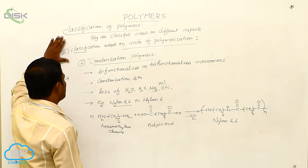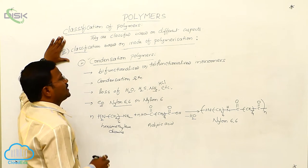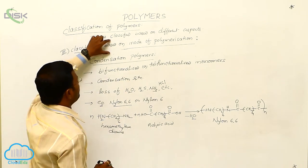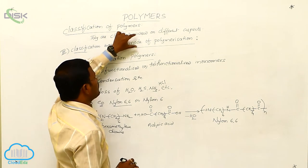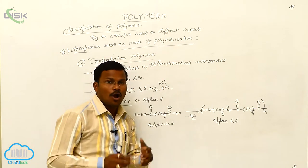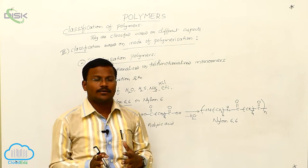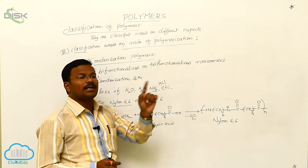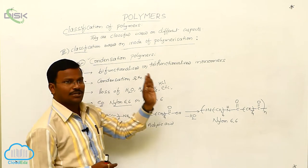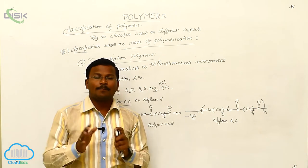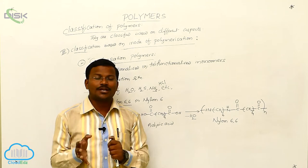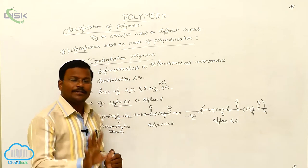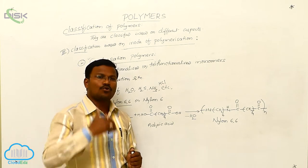Once again, this is the most important classification, especially in case of synthesis of polymers. Classification of polymers based on mode of polymerization. How many modes are identified during the polymerization? Two types. They are addition polymerization and condensation polymerization.